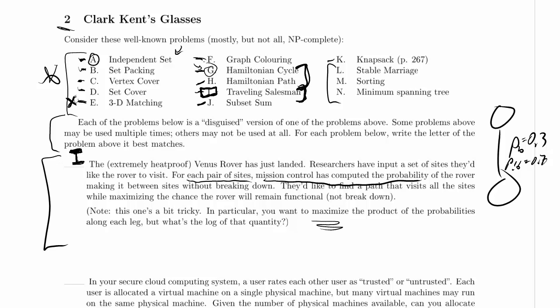So let's just convert this. Instead of thinking about maximizing the chance it will remain functional, let's minimize the chance that it will break down. And at that point, it sounds like finding the cheapest path cost.